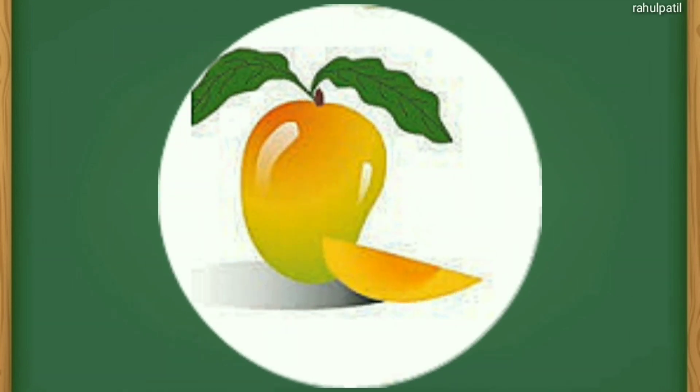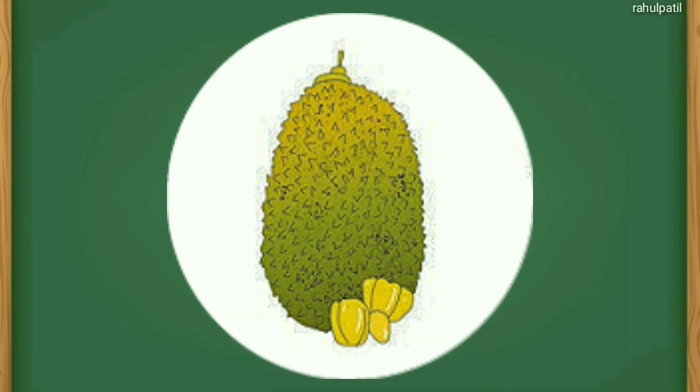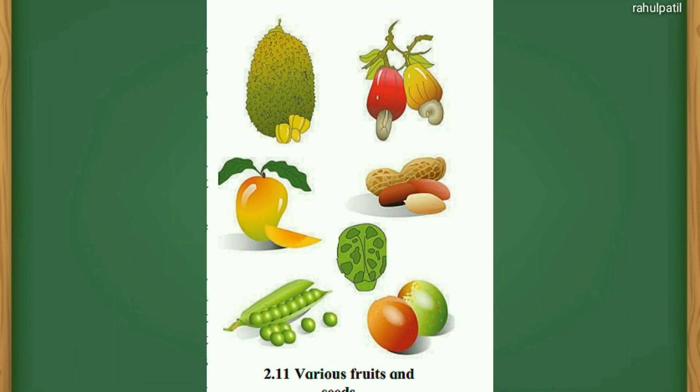Mango contains only one seed, whereas jackfruit consists of many small fruitlets, each with its own seed. Observe the fruits of bear, mango, chiku, apple, etc.